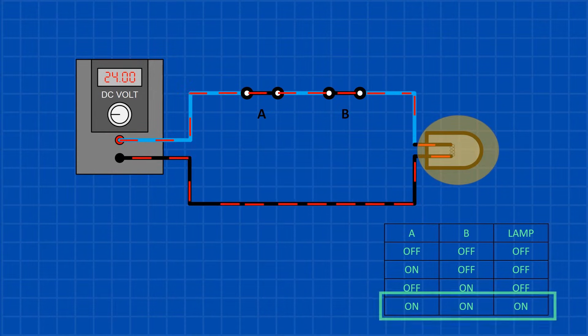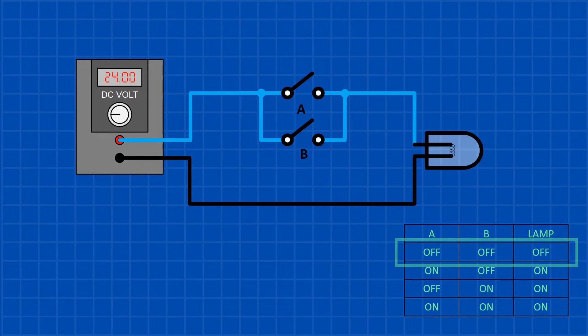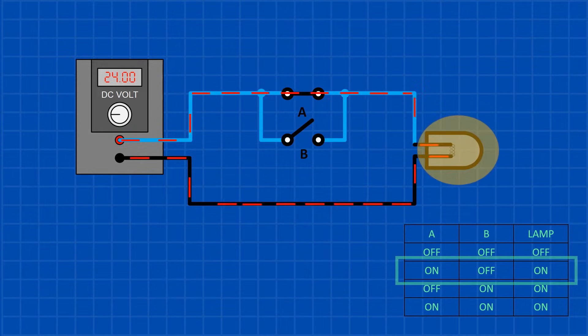Now if I put the switches in parallel, I only have to close one of the switches, A or B, in order for the lamp to come on. This is called OR logic.